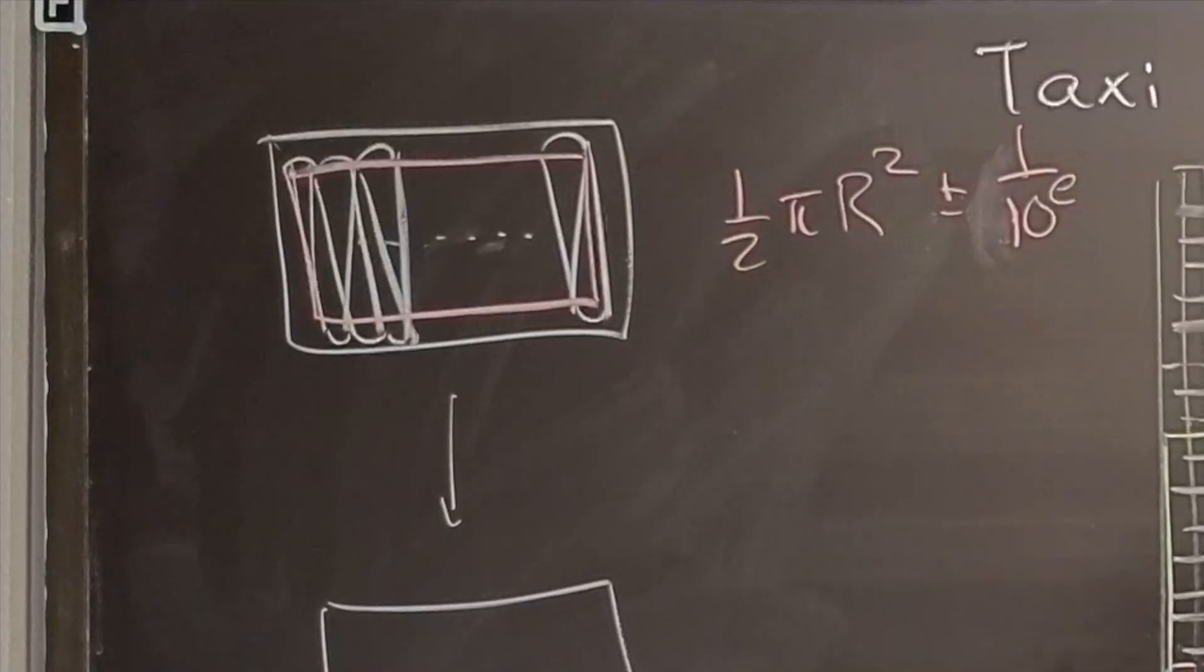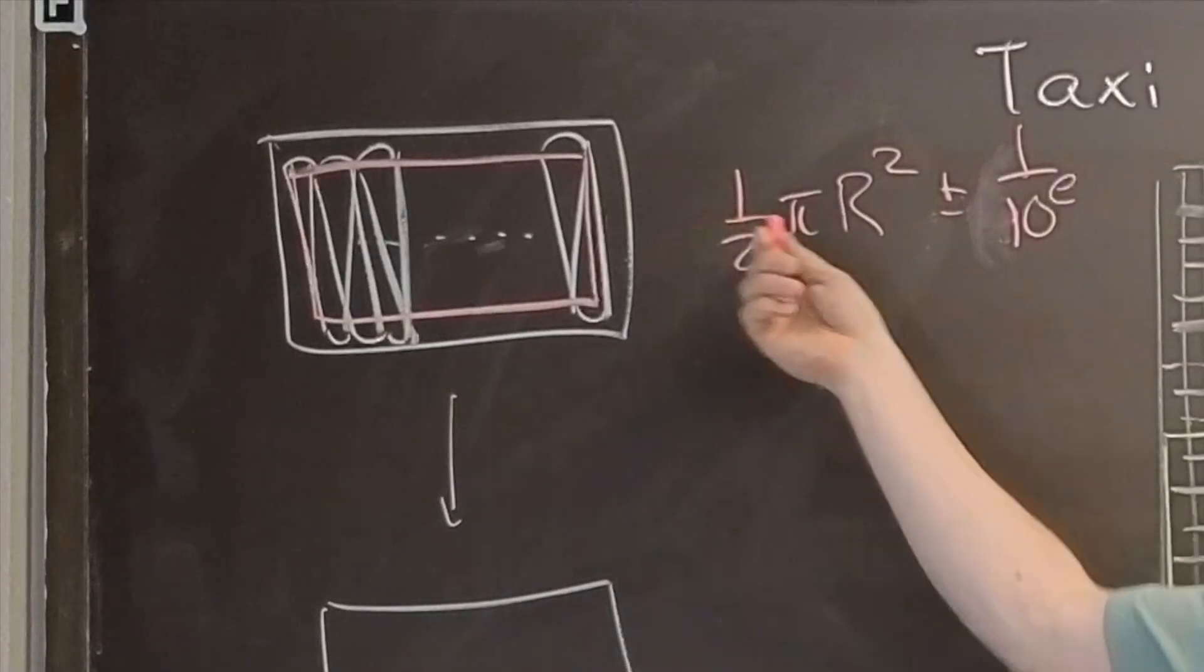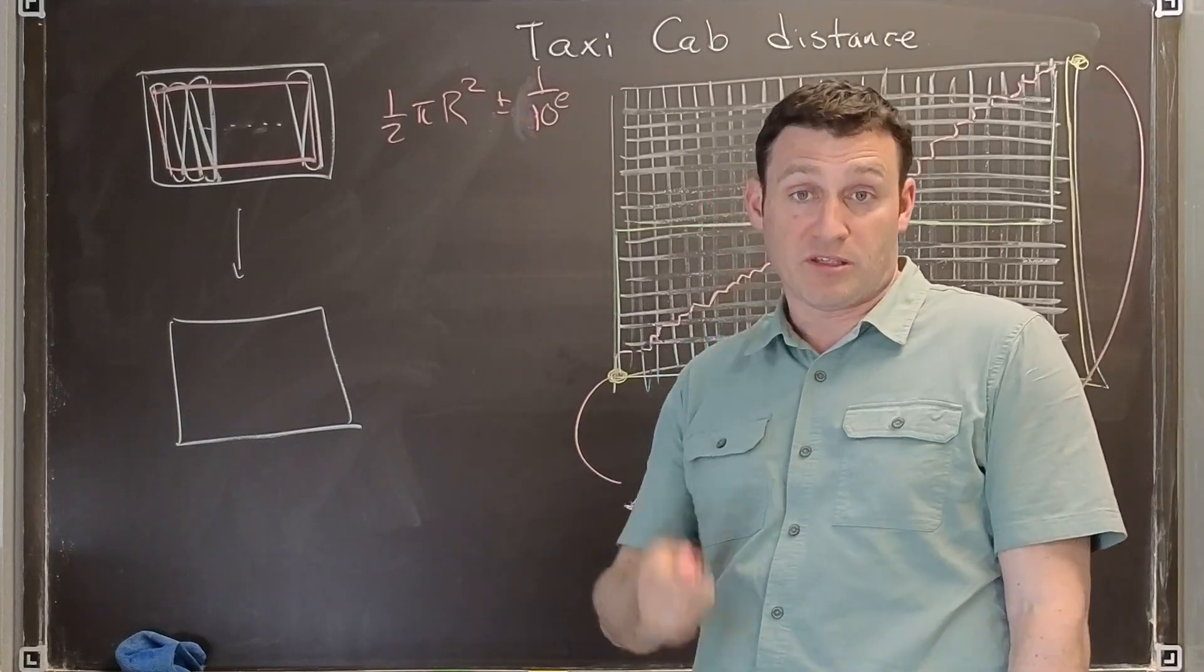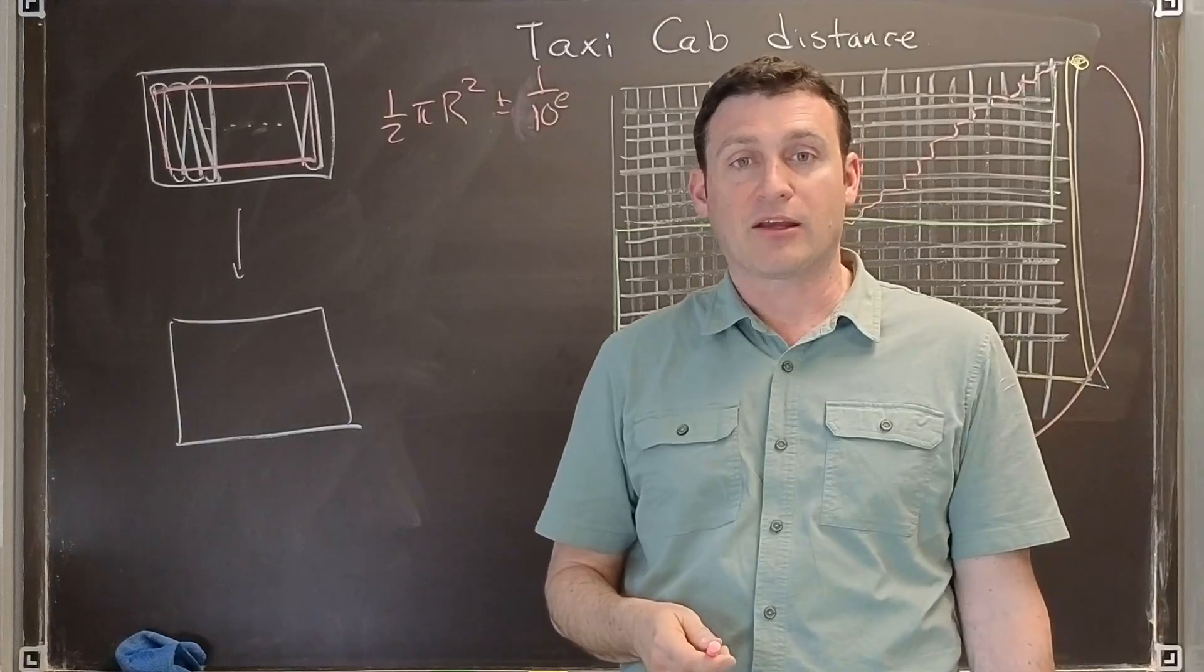So here's more accurately what we've done. We've said that we will work out the area as 1/2 pi r squared plus or minus the number of decimal places that you declare at the beginning to be accurate.